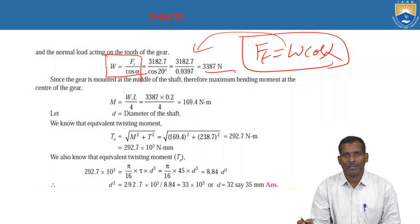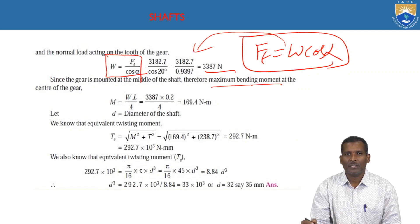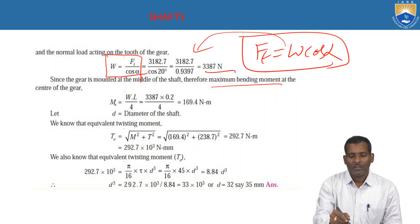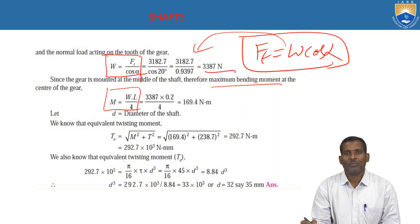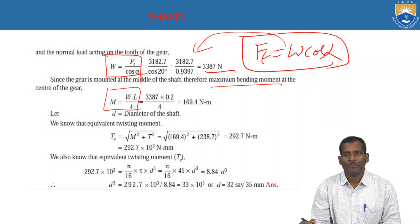Since the gear is mounted at the middle of the shaft, the maximum bending moment occurs at the center of the gear. The shaft behaves like a simply supported beam, so the bending moment is M = WL / 4. Here W is the normal load acting on the tooth and L is the total span length.